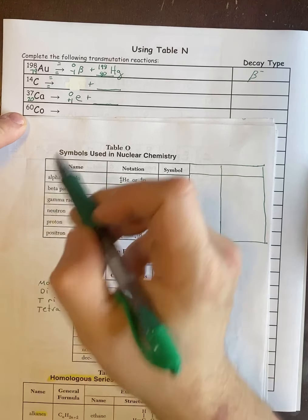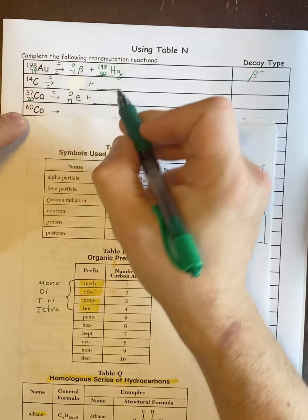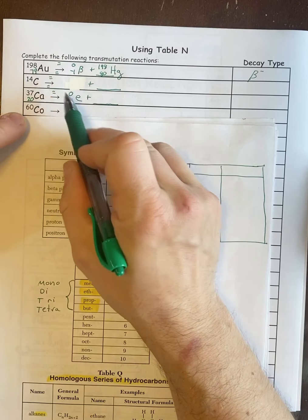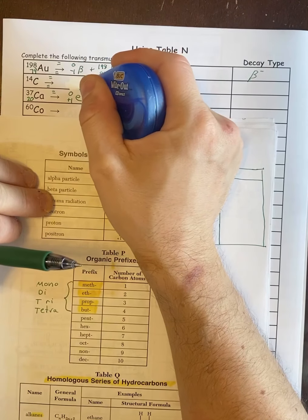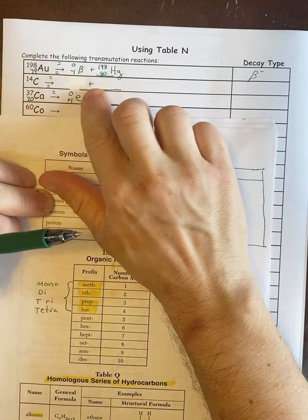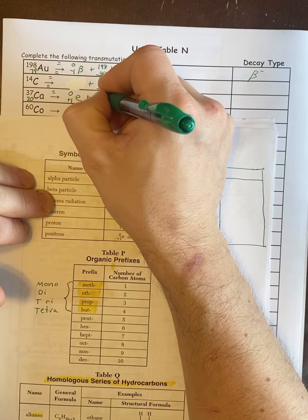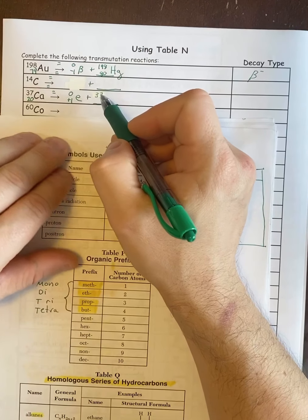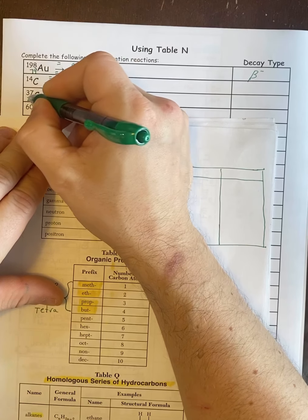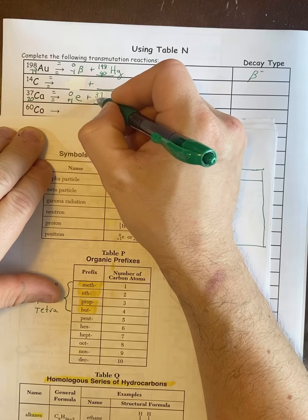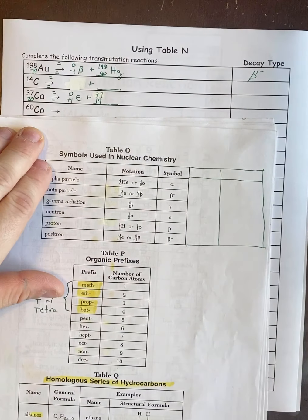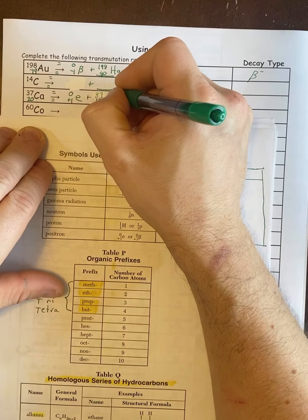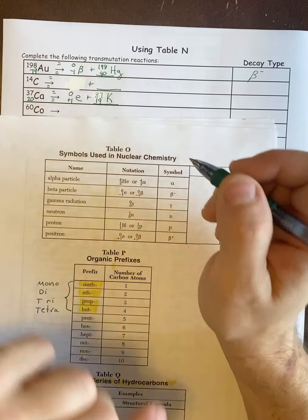For the top numbers, it's going to be 37 on the left. So I need 37 on the right. 0 plus 37. And then we do the bottom numbers. 20 on the left. I need 20 on the right. I get 19. Element 19. Let's check the periodic table. It is potassium or K.